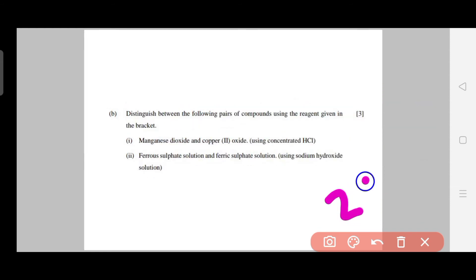Now this is again a 2019 question. See question number 2. The question is: Distinguish between the following pairs of compounds using the reagent given in the bracket. So basically what you need to do here is distinguish what is given. Let me read the question first: ferrous sulfate solution and ferric sulfate solution. So you need to differentiate between these two but using sodium hydroxide only. If you consider ammonium hydroxide then you won't be given any marks. So on the basis of sodium hydroxide you need to give a difference between them.